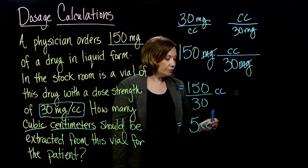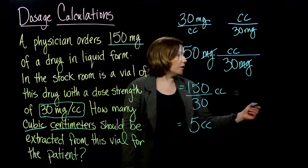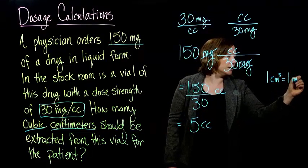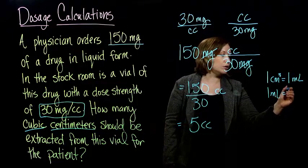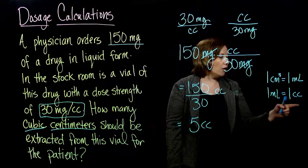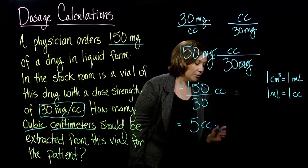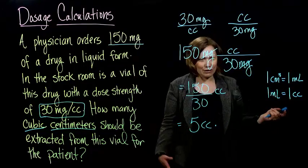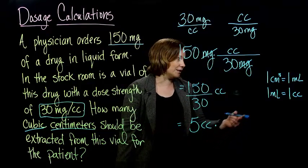I know that 1 cubic centimeter is equal to 1 milliliter, and I also know 1 milliliter is equal to 1 cc. So I can convert the cc's to milliliters. If we're going through the dimensional analysis, or you could just see that all of these things are equivalent and replace the cc's with the cubic centimeters. But let's go through the dimensional analysis to see how it goes.